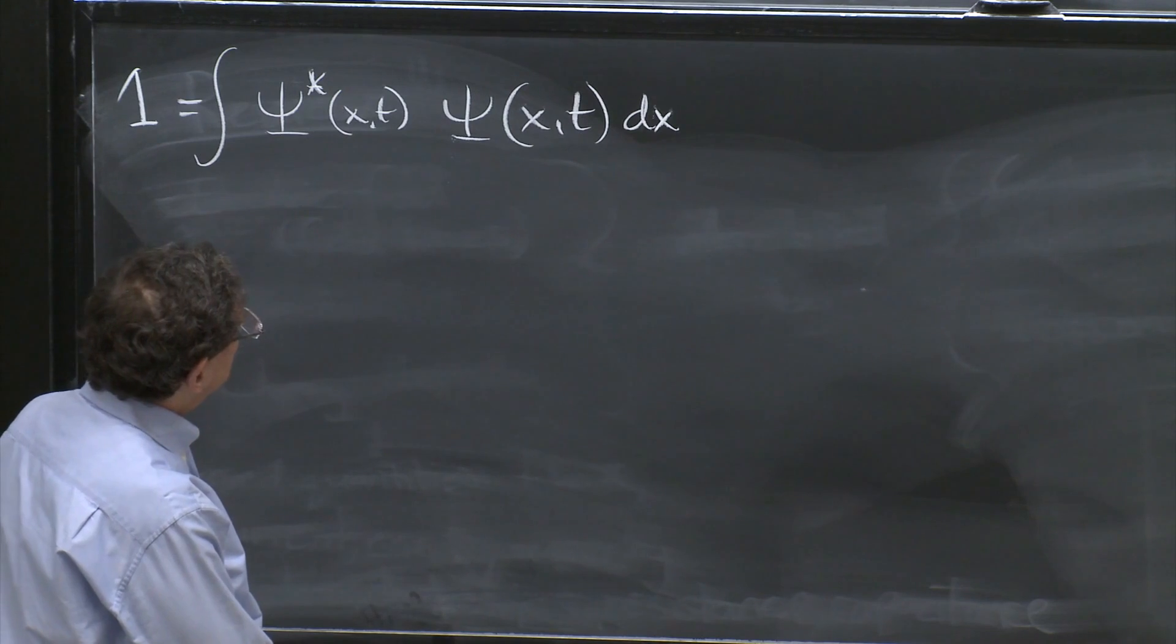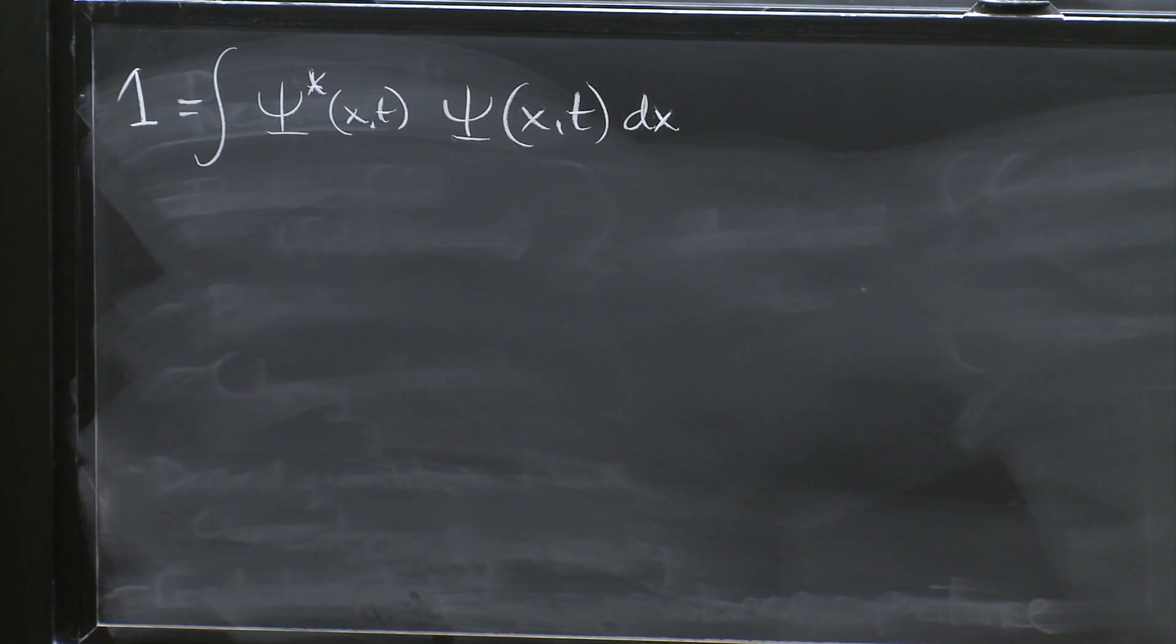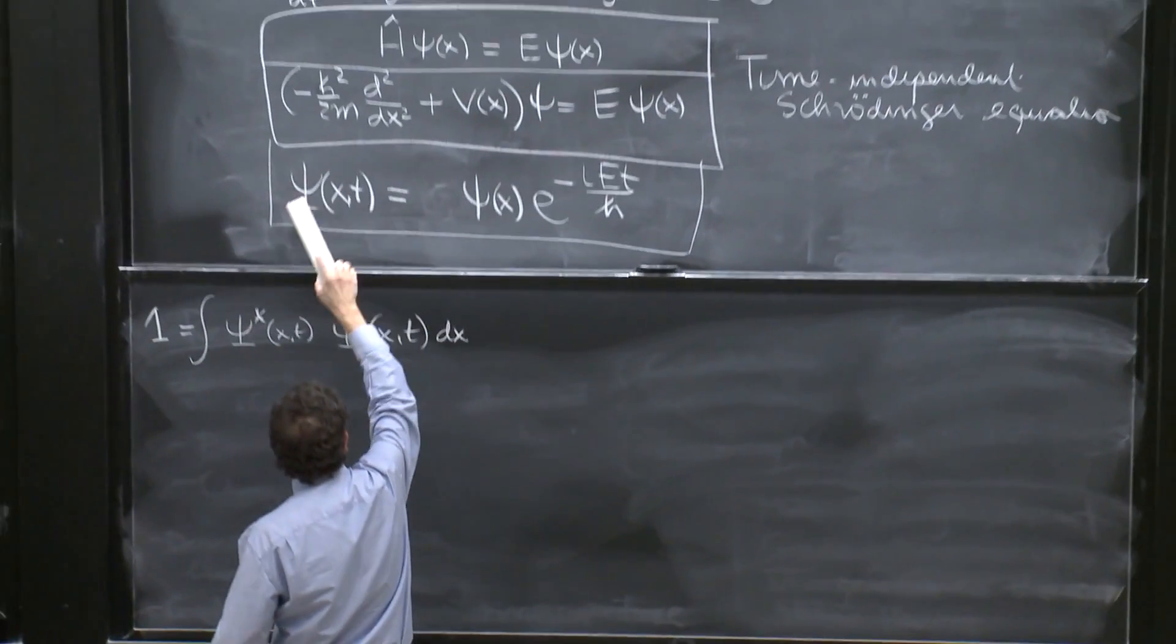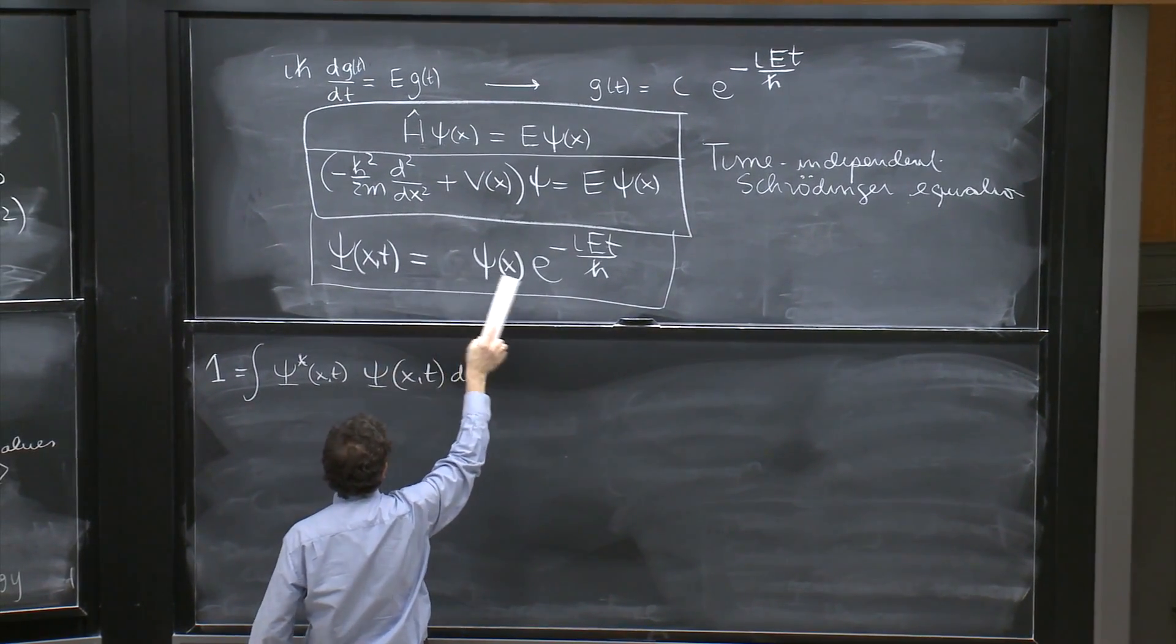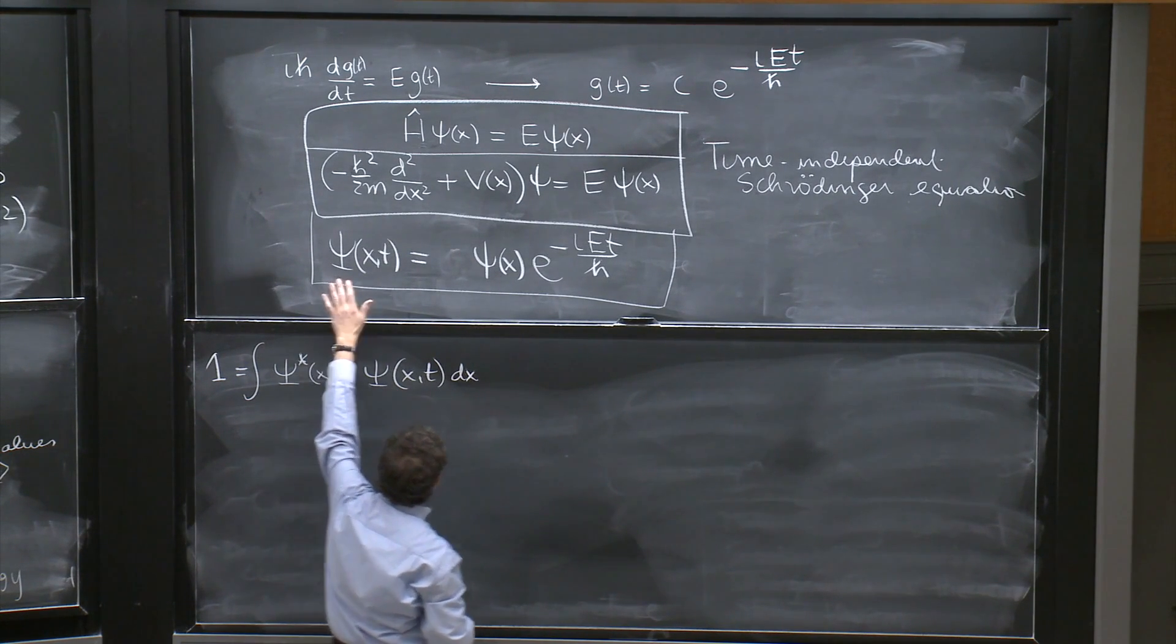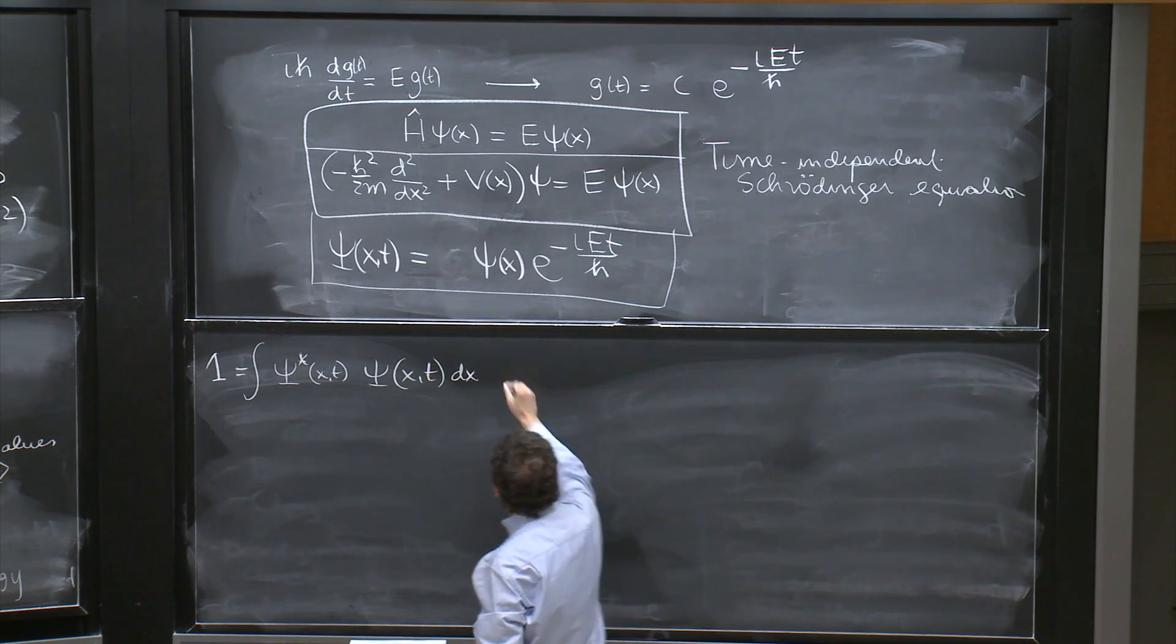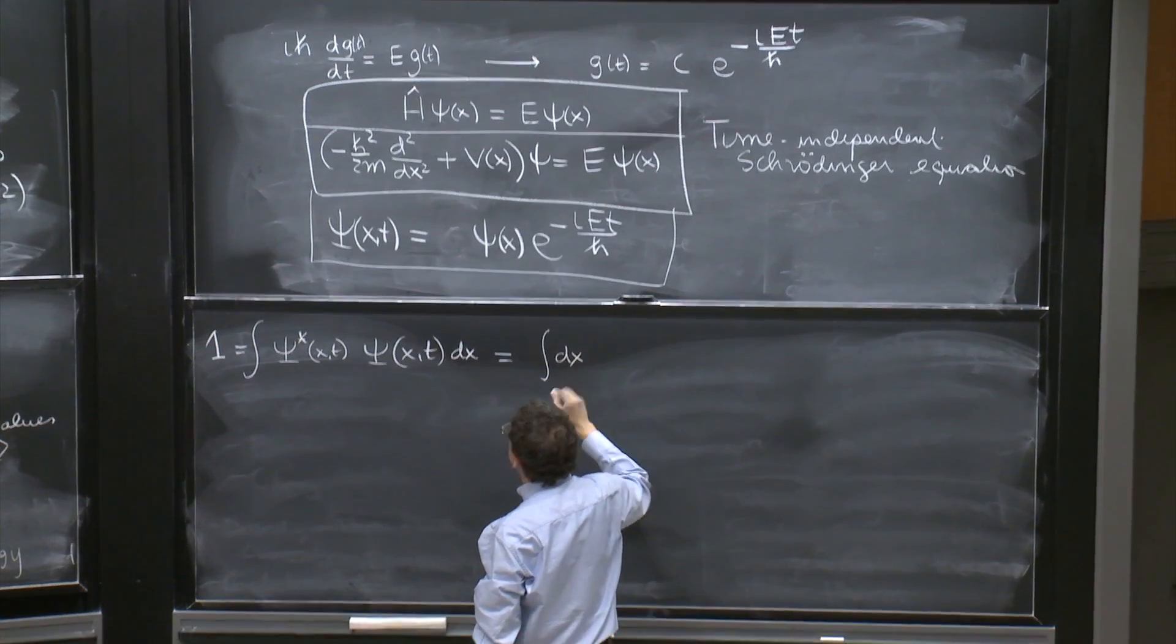And let's see what we get here. I'm going to erase that constant C here, because since we want to normalize this, we will think of this as a normalization of psi. When we try to normalize psi, we'll be normalizing little psi, as you will see there. There's no need to put that constant there. So, what do we get here? We get integral dx, psi star of x and t.